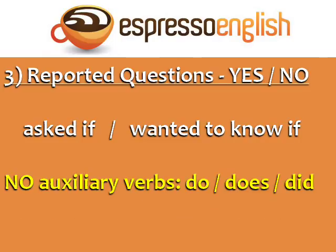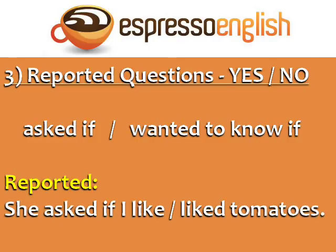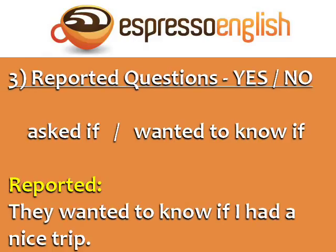In reported yes or no questions, we don't use the auxiliary verbs do, does, or did. For example — Direct: 'Do you like tomatoes?' Reported: 'She asked if I liked tomatoes.' Direct: 'Did you have a nice trip?' In the reported question, we don't use the auxiliary verb did: 'They wanted to know if I had a nice trip.'